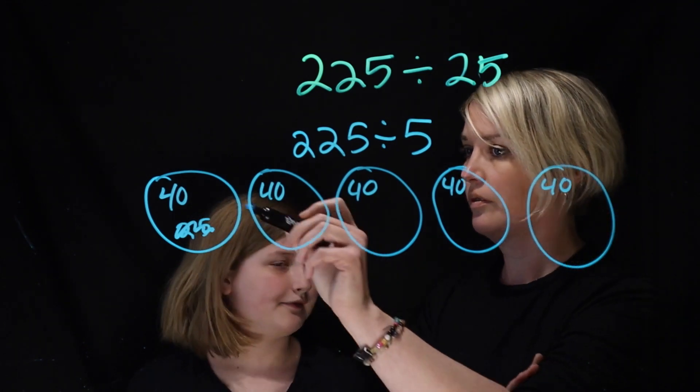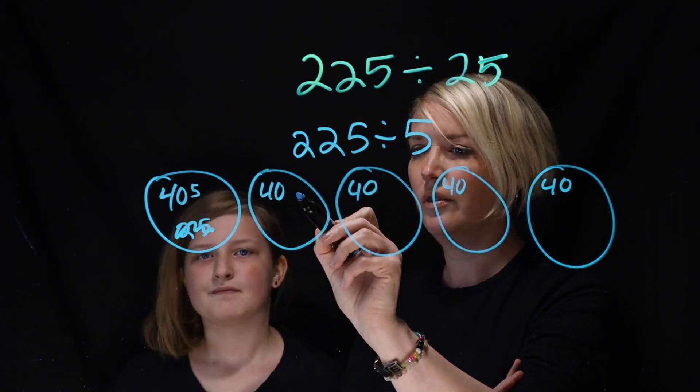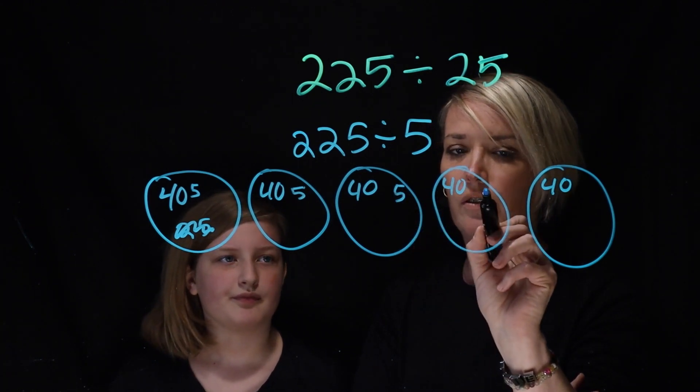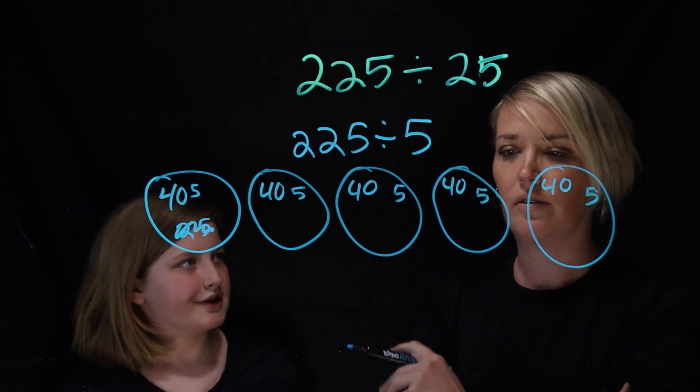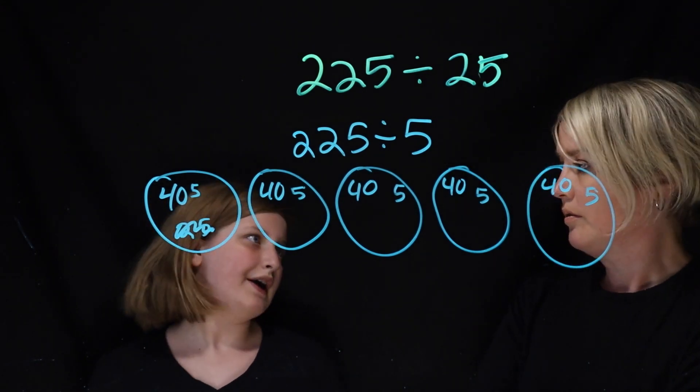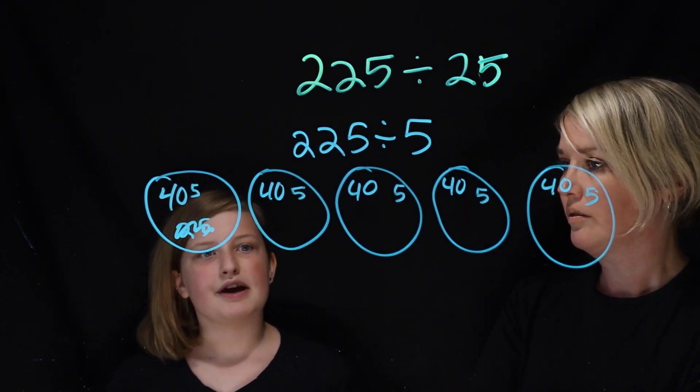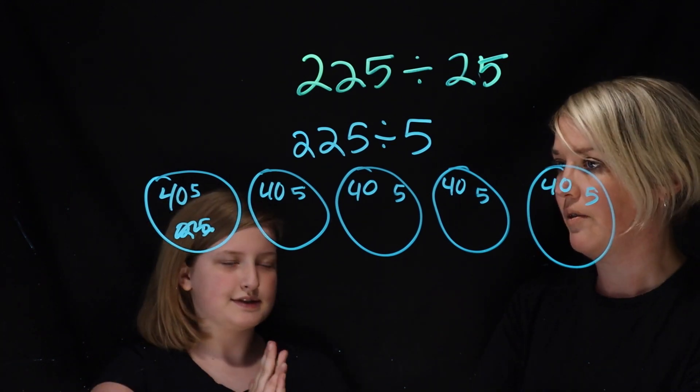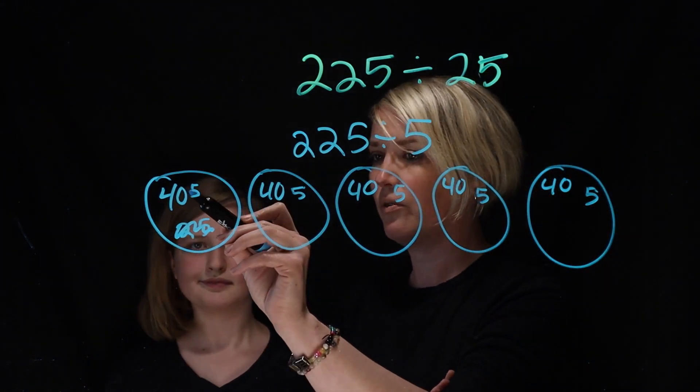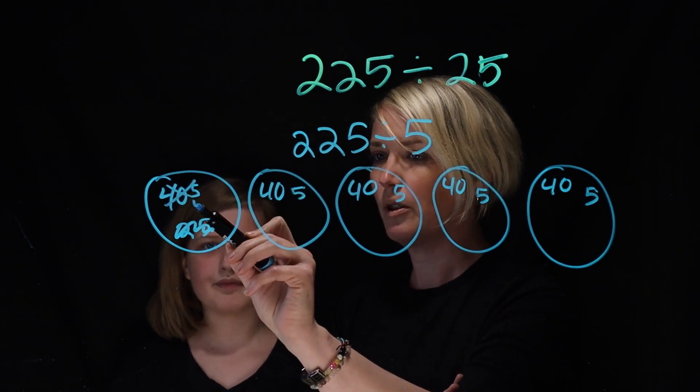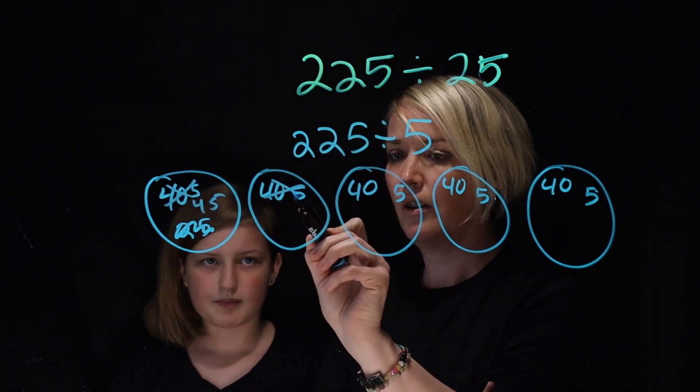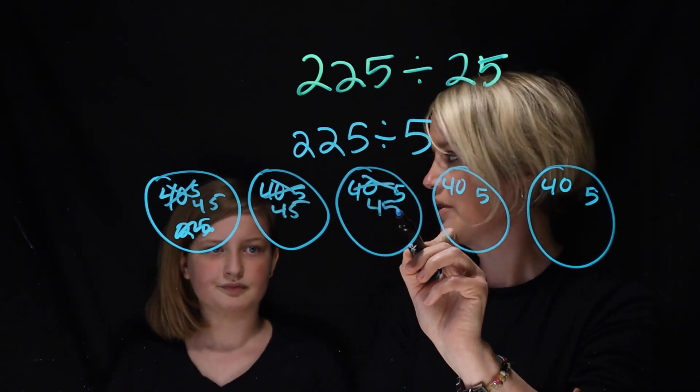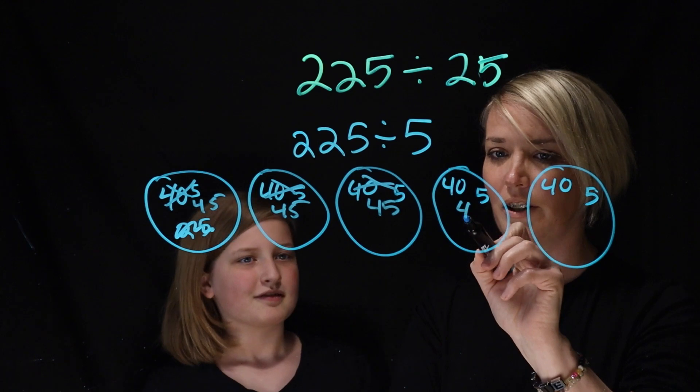So I'm gonna add 5. Okay. So 5 and 5, 5, 5, 5, 5. Which, 5 times 5 is 25. So now we have to add 25 and 200 together, which is 225. Mm-hmm. But, so we have groups of 45, right? Mm-hmm. So I'm gonna put 45 here. But we need 25 groups, not 5. So what are you gonna do?